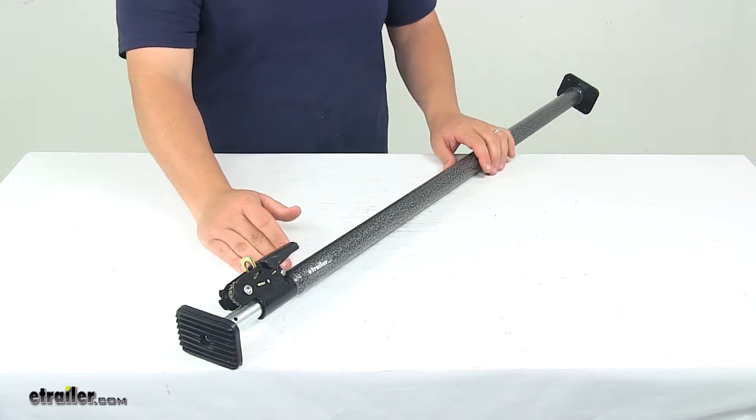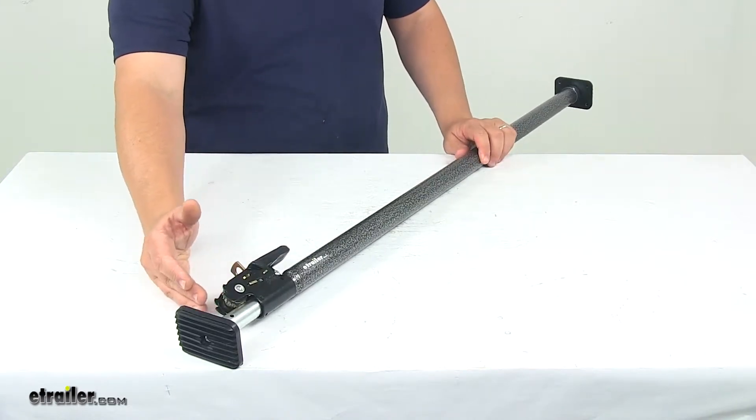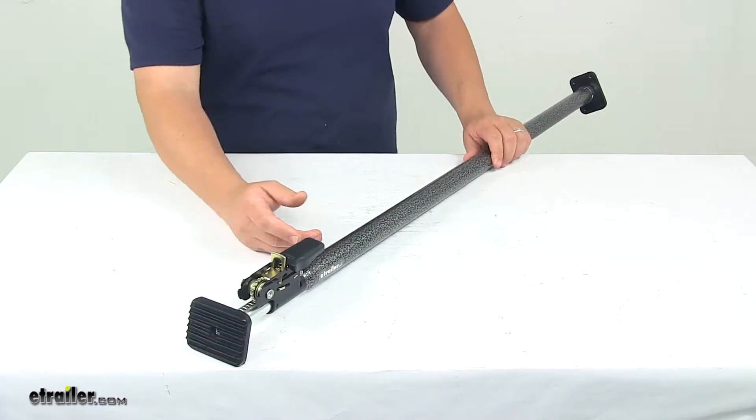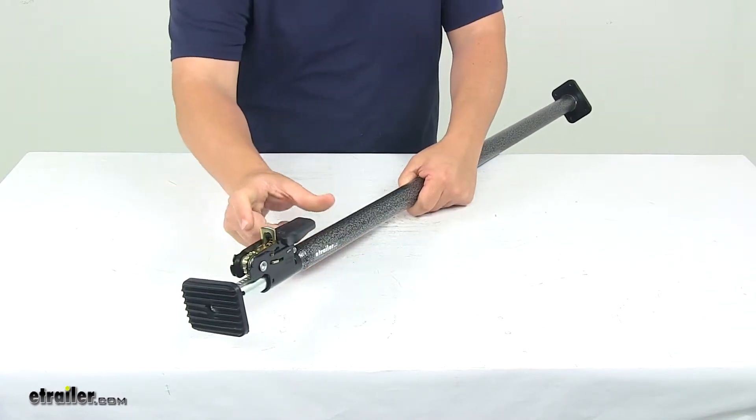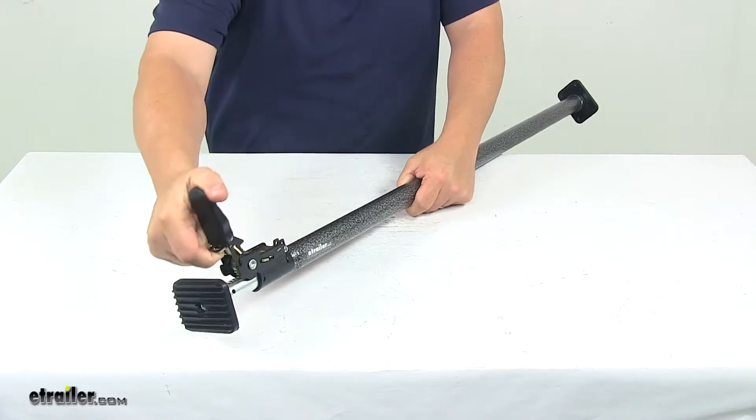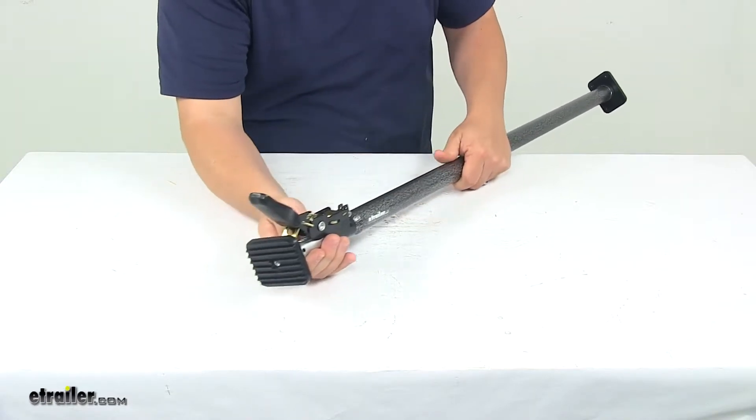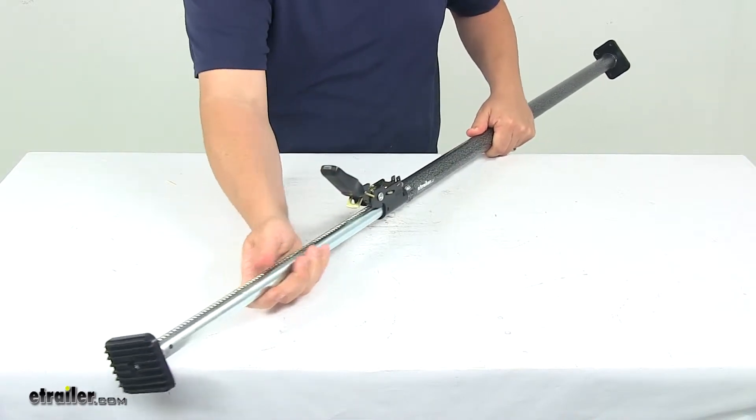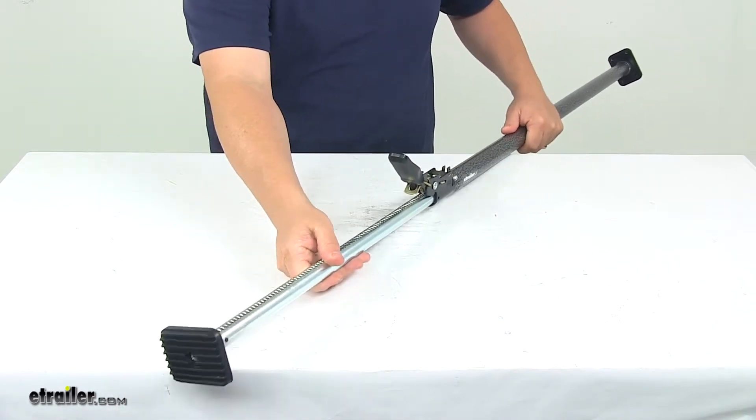Now this bar can adjust anywhere from 44 inches out to 74 inches. It's very easy to adjust. All you need to do is pull the release lever, lift the handle to the fully open position, and then you can pull out on this portion as much as you need to.